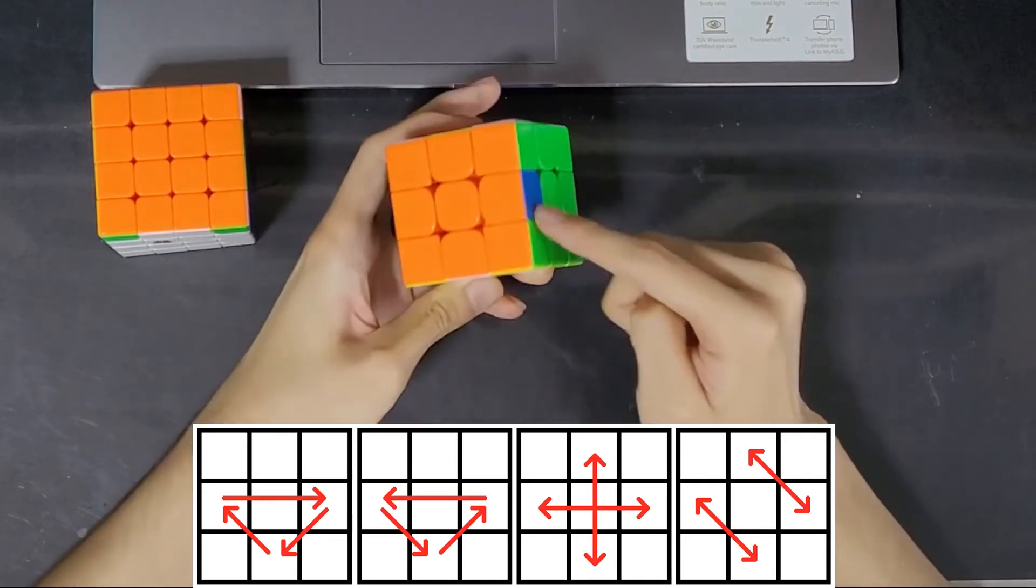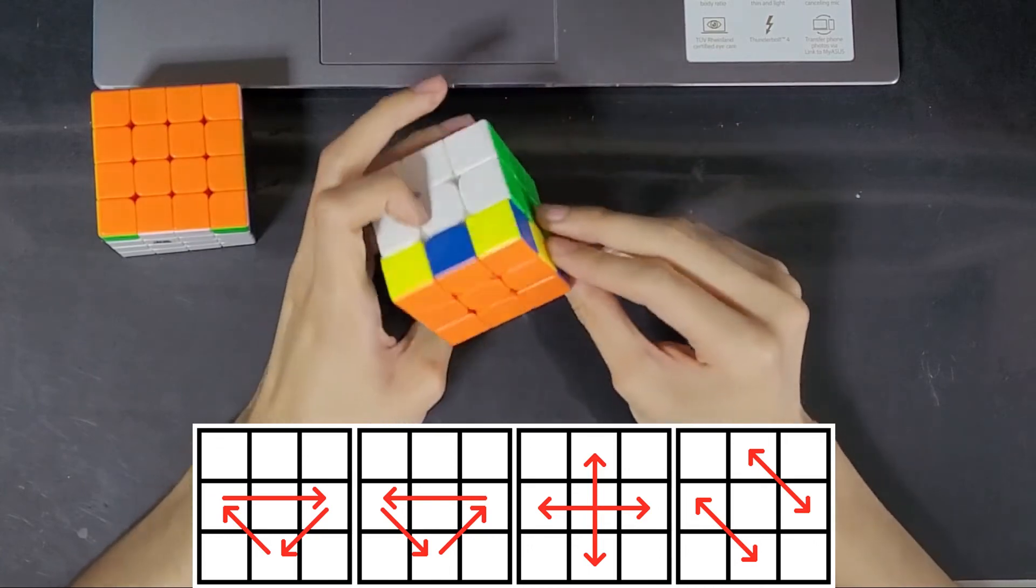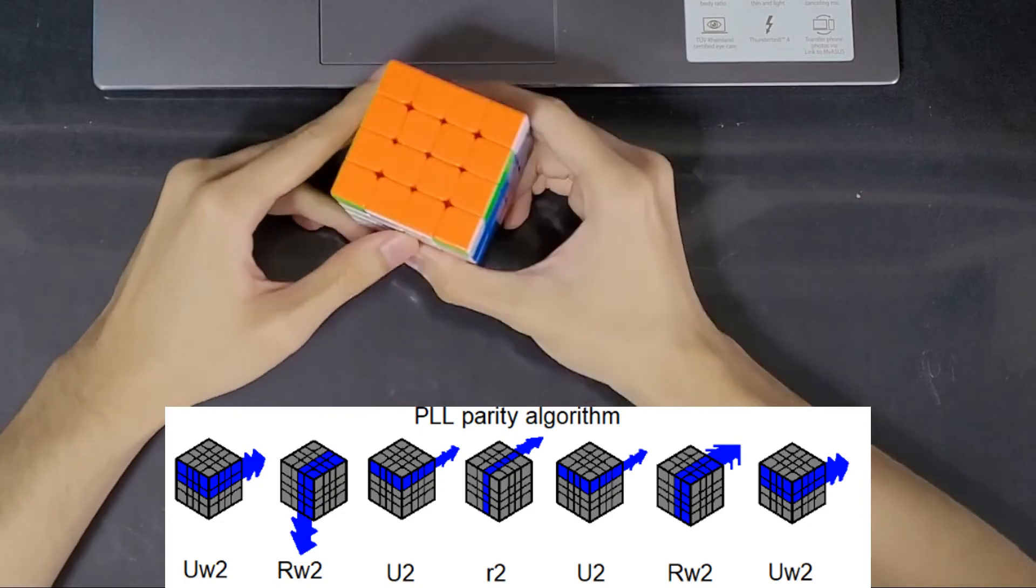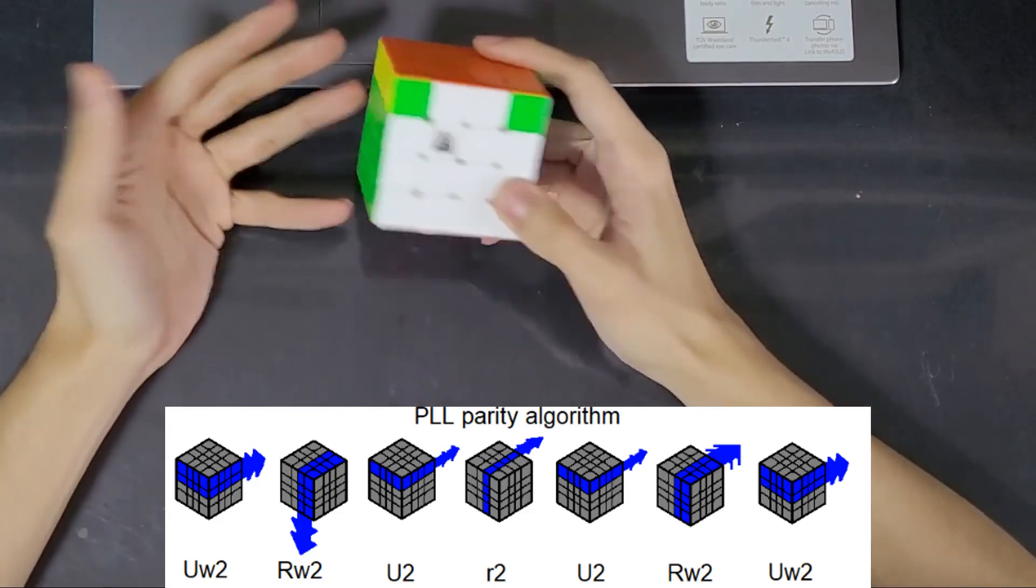So if you have encountered a pattern that is not among these four, then you basically have gotten an impossible case. And you can solve it with the algorithm that switches two opposite edges, which I demonstrated earlier with the other beginner method. It's basically this one.